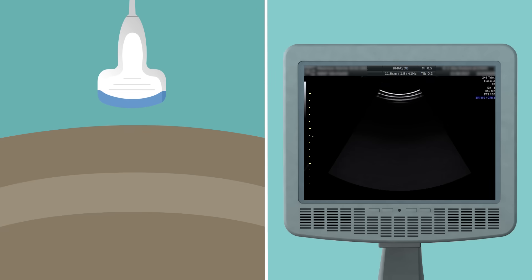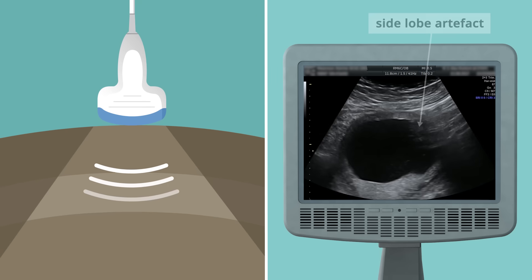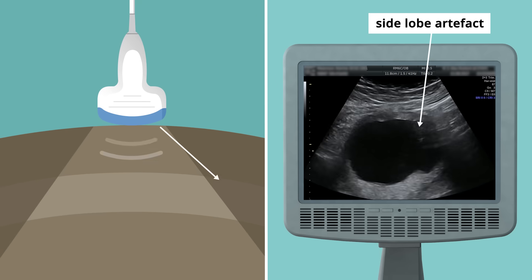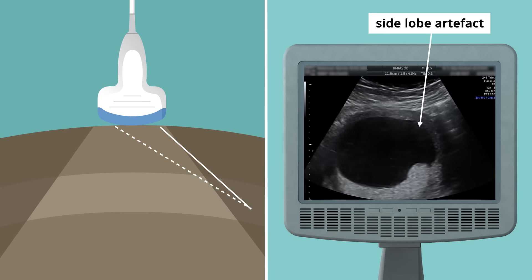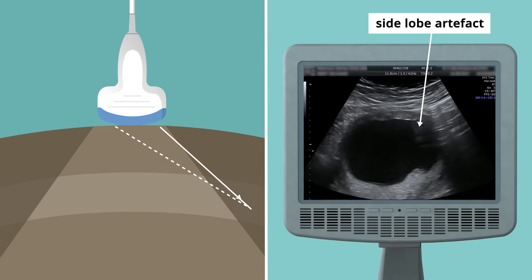Side lobe artifacts can happen when the ultrasound signal is reflected back from tissue to one side of the main sound wave, causing incorrect information being displayed in the image.